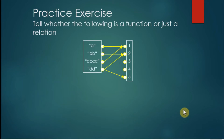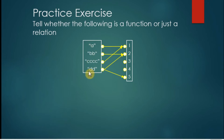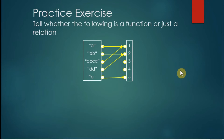Let's have some practice exercises to identify whether the following mappings are a mere relation or a function. For the first one, all elements in the domain have a pair, so it passes the first condition. However, the second condition is violated because one element is paired to both 2 and 5. So this is only a relation, not a function.